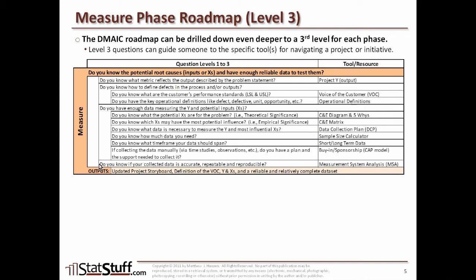The last third-level question is: if collecting data manually — for example using time studies, observations, or tick sheets — do you have a plan and the support needed to collect it? You'll need sponsorship and buy-in from your team to collect data in the right way and build a data set you can trust. The last second-level question is: do you know if your collected data is accurate, repeatable, and reproducible? This is essential because without trustworthy data, any analysis won't be valuable. Use measurement system analysis, or MSA, to ensure your data is accurate, repeatable, and reproducible. Once you can answer yes to all these questions, you should be answering yes to the top-level question: you've identified the potential root causes and have enough reliable data to test them.